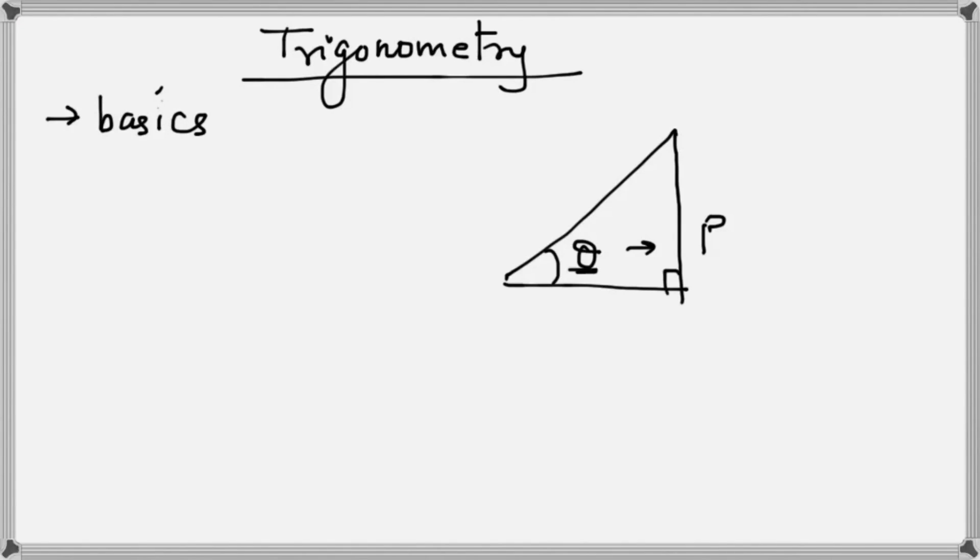This is a right angle triangle, and the side attached with the angle is called the base, and this slanted side is called the hypotenuse.